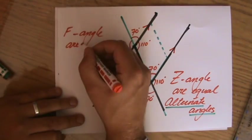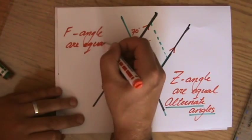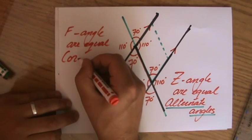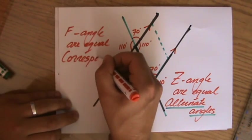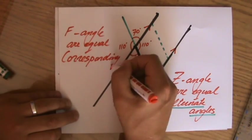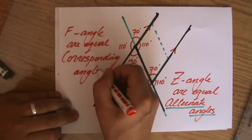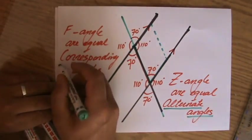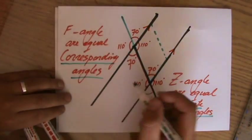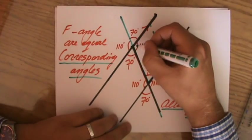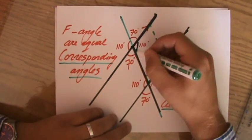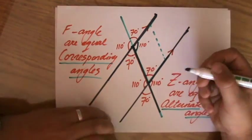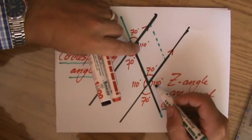But we don't really write about F angles, it's not the official language. We call those corresponding angles. And you need to be familiar with those words. Because on exams they will ask you, why are they equal? Well, then you've got to say they're equal because they're corresponding angles. So F angles, this one, if I have a parallel line, a straight line cutting the other parallel line as well, then these are F angles, they are equal.